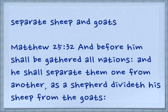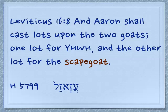We don't actually see any talk of separating the sheep from the goats until the Brit HaChadashah, when Yeshua talks about it in Matthew 25:32: 'And before him shall be gathered all nations, and he shall separate them one from another, as a shepherd divideth his sheep from the goats.' We do see some negative connotation about the goat in the Tanakh, in Leviticus 16:8: 'And Aaron shall cast lots upon the two goats, one for Yehovah and the other lot for the scapegoat.'